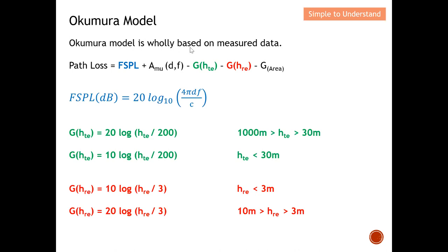The Okumura model is based on measured data rather than derived equations — they established relationships from measurements to arrive at path loss values. Here is the path loss equation for the Okumura model. The term FSPL is the free space path loss, which I discussed earlier. I'll also go through the gain of the transmitter antenna and the gain of the receiver antenna.